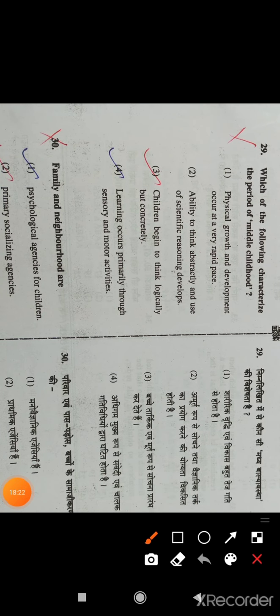Question number 29: Which of the following characterizes the period of middle childhood? Option C is right. Children begin to think logically but concretely.